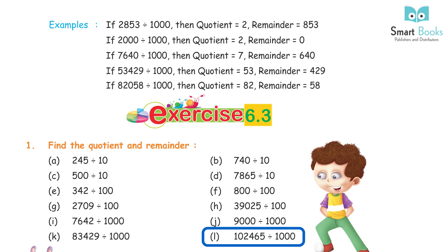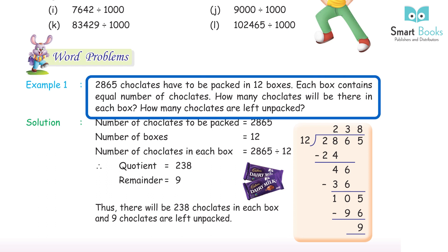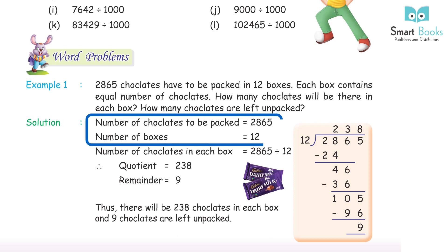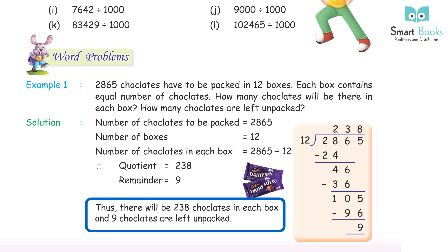Word Problem Example 1: 2865 chocolates have to be packed in 12 boxes, each box containing an equal number of chocolates. How many chocolates will be in each box and how many are left unpacked? Solution: 2865 ÷ 12 → quotient 238, remainder 9. Thus, there will be 238 chocolates in each box and 9 chocolates are left unpacked.